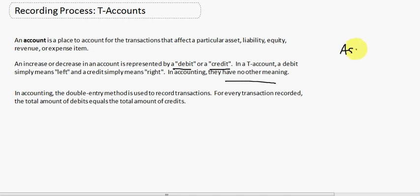So if we looked at an asset T-Account, if I said debit the asset account by $100, you would simply put $100 on the left-hand side of the T-Account. If I say credit the asset account by $100, you would simply put $100 on the right-hand side of the T-Account.